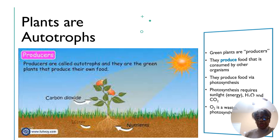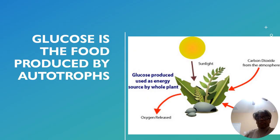Green plants are producers. They produce food that is consumed by other organisms via a process called photosynthesis, which requires sunlight as the energy source, water, and carbon dioxide. Oxygen is a waste product of photosynthesis. So the process requires energy in the form of sunlight, carbon dioxide from the atmosphere, and water from the ground, and the end result is glucose — the food produced by these autotrophs. The waste product of photosynthesis is oxygen.